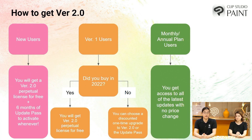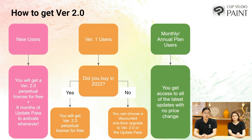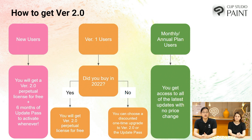If there's a feature you'd like to try in version 2, you can activate your update pass and try it out. Please be careful — if you do not want to continue using the update pass after six months, you need to cancel it before it expires. For version 1 users who bought their license in 2022, you will get a version 2.0 perpetual license for free. If you did not buy it in 2022, you can choose a discounted one-time upgrade to version 2.0 or purchase an update pass. For monthly and annual plan users, you will get access to all the latest updates with no price change.